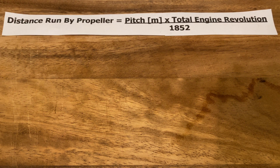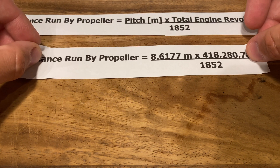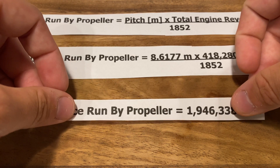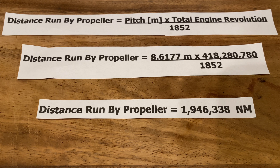Let's look at some formulas. The distance run by the propeller in nautical miles is equal to the pitch in meters times the total engine revolutions divided by 1,852. Our pitch is 8.6177 meters times our total engine revolutions of 418,280,780 divided by 1,852, which equals 1,946,338 nautical miles. This is how far the ship should have traveled over its lifetime so far with perfect efficiency.